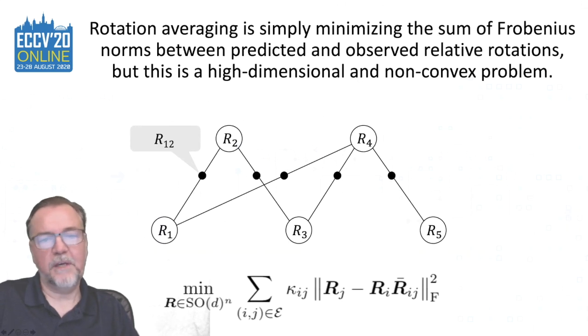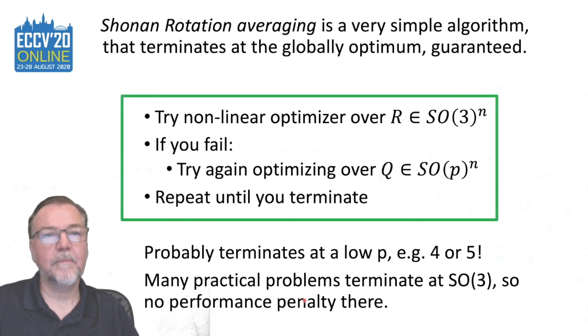It can be formalized by a factor graph where there are unknown 3D rotations, R1 to R5 in this case, and a set of known relative pairwise rotations possibly corrupted with additive noise. The objective factor is a Frobenius norm and we minimize the sum of the Frobenius norms, moderated by a concentration parameter kappa. This is high dimensional and not convex.